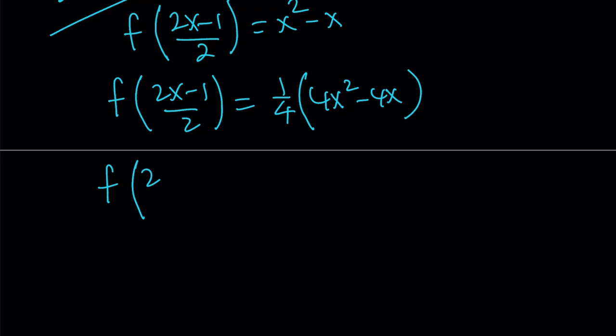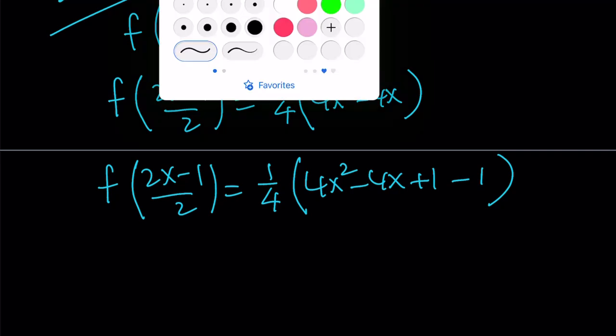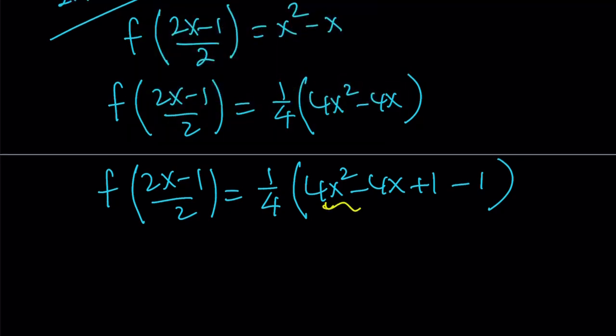So I'm going to write the 4x squared minus 4x as 4x squared minus 4x plus 1 minus 1. Why did I do the plus minus 1 here? Because this is a perfect square. And that just happens to be 2x minus 1 quantity squared. And we do have a 2x minus 1 here, which is awesome.